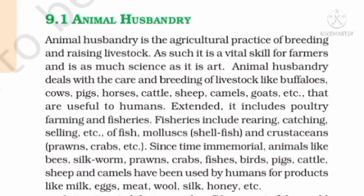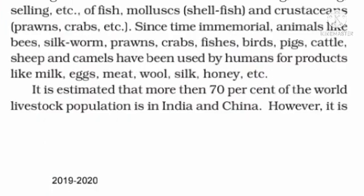Since time immemorial, animals like bees, silkworms, prawns, crabs, fishes, birds, pigs, cattle, sheep and camels have been used by humans for products like milk, egg, meat, wool, silk, honey, etc.